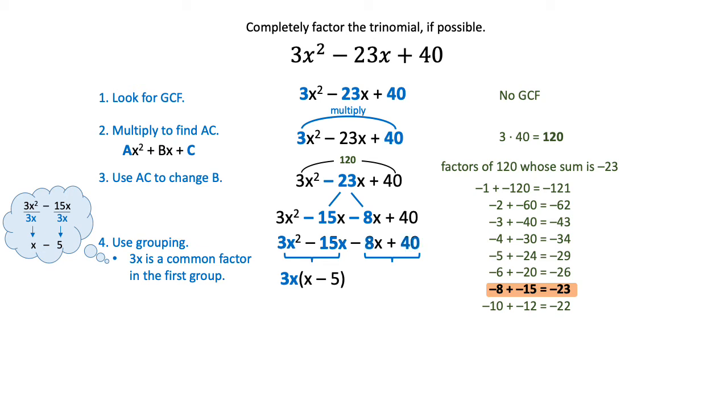In the second group, you've got a negative 8 and a 40. Negative 8 is a common factor in this group. I want to definitely factor out a negative 8 so that I can get a positive x minus 5 again. So I'm going to take that and put minus 8 with parentheses x minus 5.